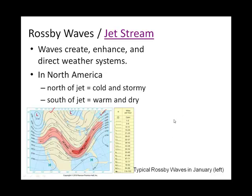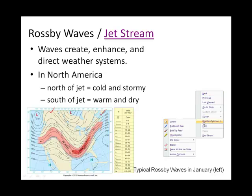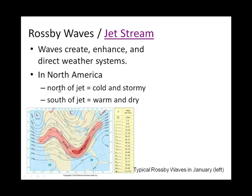These Rossby waves have certain consequences. If you are north of the jet stream — which is associated with these Rossby waves — you will tend to have cold and stormy weather. If you're south, your weather will be warmer, and it may or may not be dry.